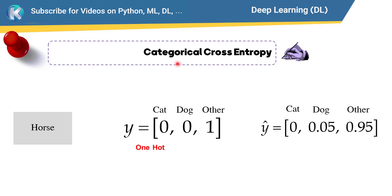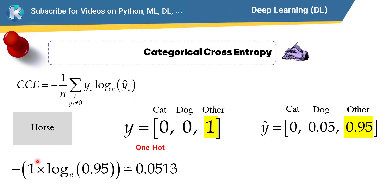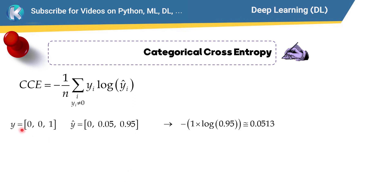To calculate categorical cross entropy, we use the formula — explained by example. We can see that y_i is 0 for cat and 0 for dog, but 1 for other animals. So we multiply that non-zero y_i (which is 1) by the natural log of the corresponding prediction value, which is 0.95. This gives us 1 × ln(0.95) — and this is the calculation for the first data point.